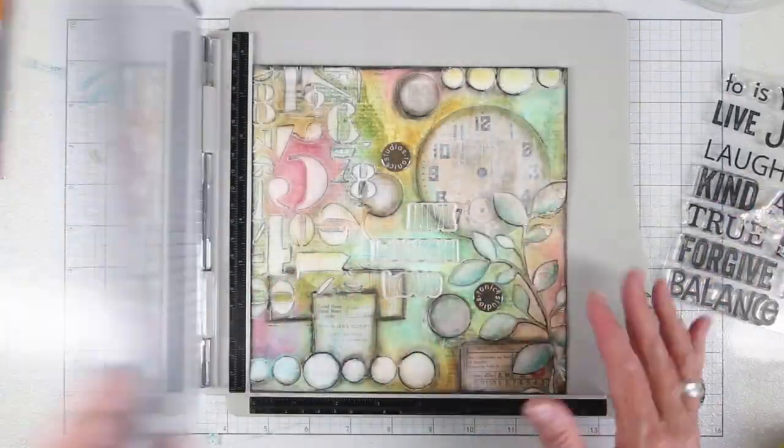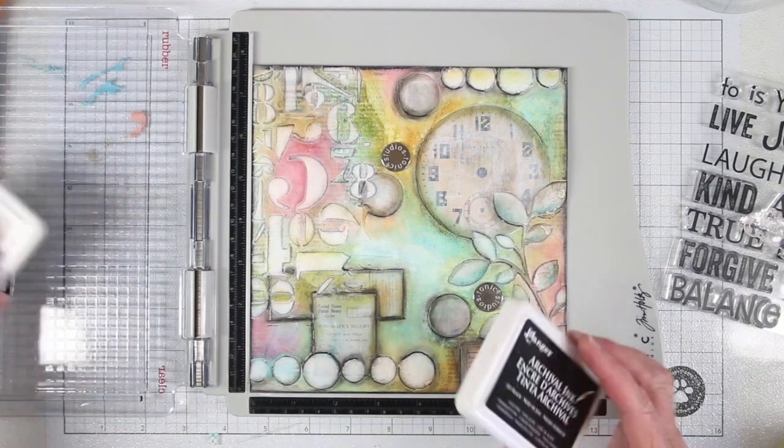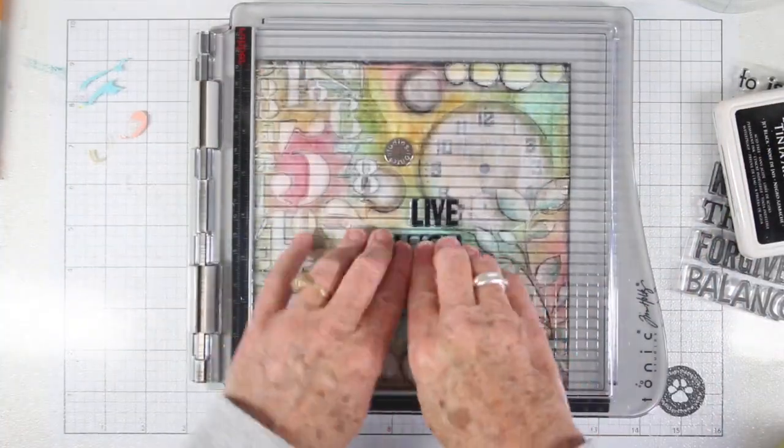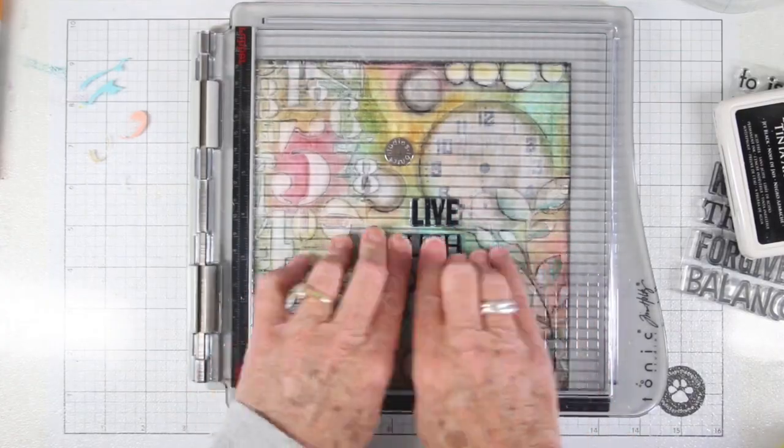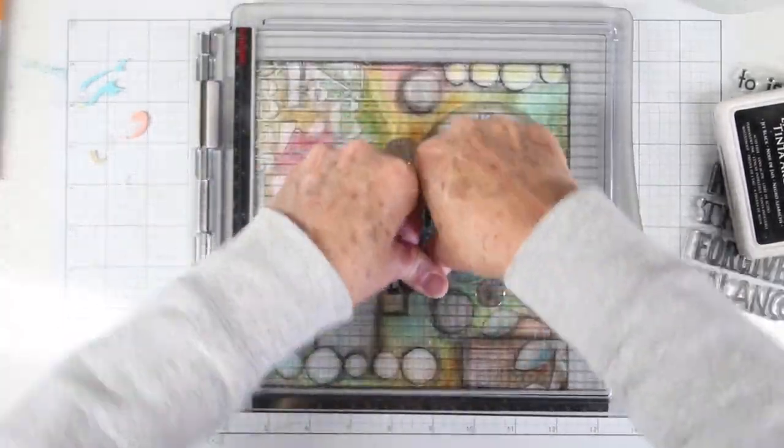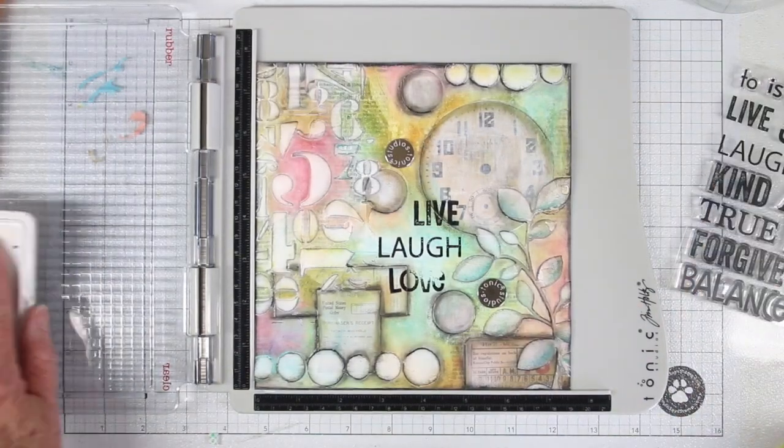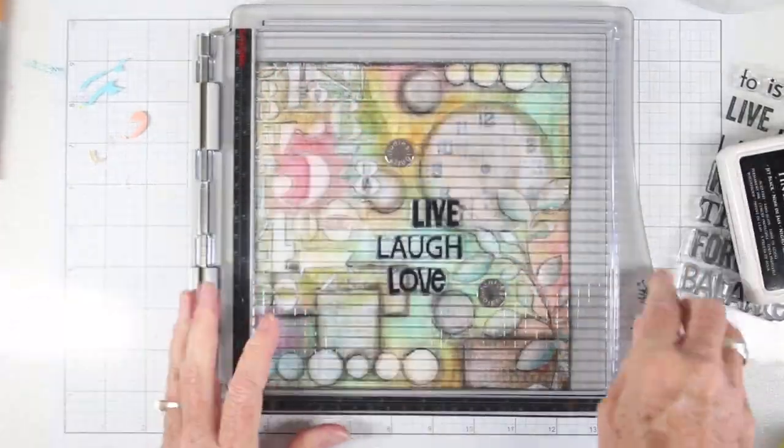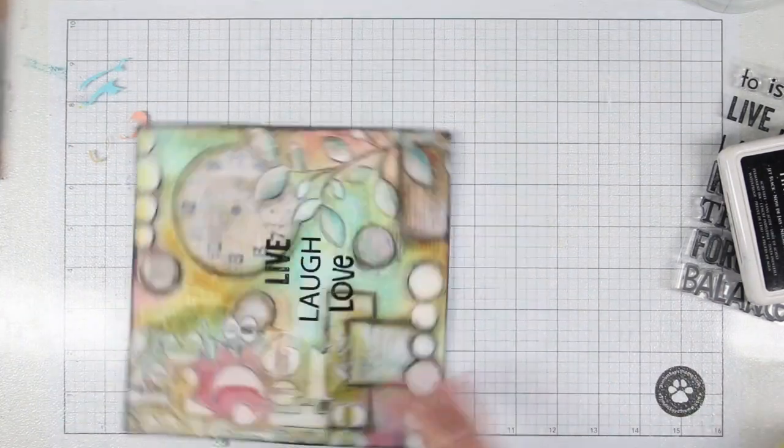It's time to add my title. I have put these into my Tim Holtz stamp platform and I am using black archival ink once again. I've placed my stamps to where that 'laugh' will sit right in a nice flat space, and then 'live' and 'love' are on a little bit of a bump, so I know that I'm going to have to go back over a couple times just to make sure that I have those inked. When you're stamping on an uneven surface, this is when your stamp platform comes in really handy because it holds everything in place. If you still can't get it, it's okay—we can use the Pitt pen to fill in the letters.